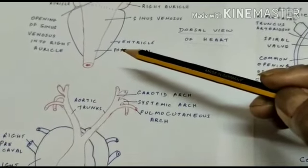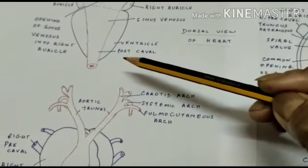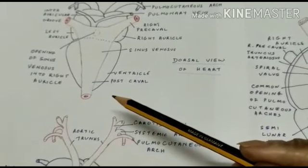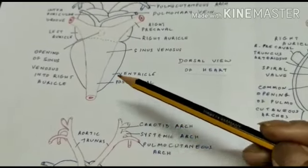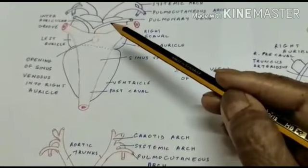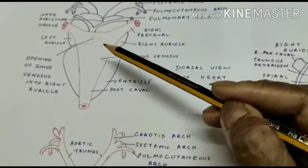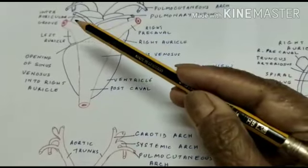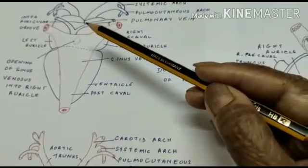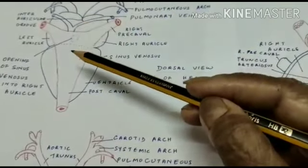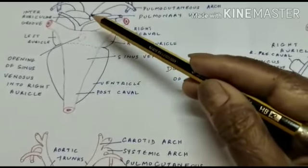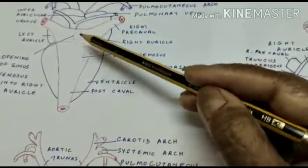In between the two pericardial membranes is the pericardial space, which is filled with pericardial fluid that protects the heart from shocks. The right auricle is much larger than the left auricle. On the external surface a groove is present between the two, which is referred to as the sulcus or coronary sulcus, and this is a vertical groove.